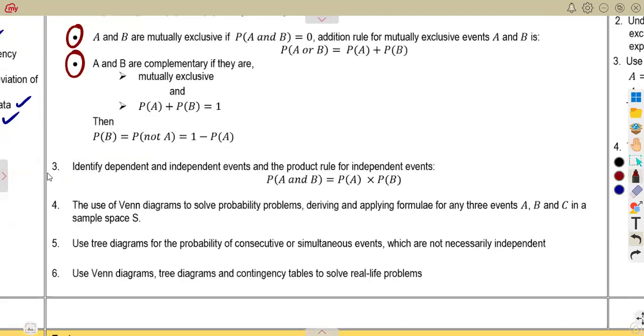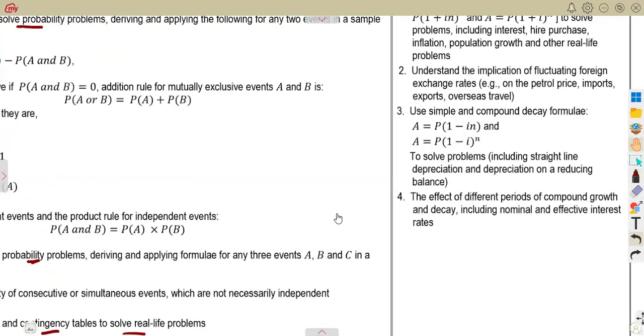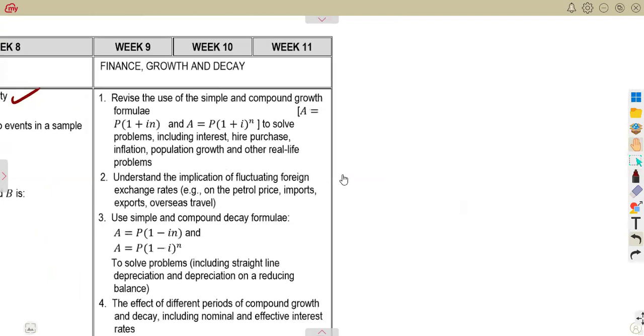Also, you must be able to identify dependent and independent events in the simplification that you are going to use, then the use of the Venn diagrams to solve probability problems, and also the use of tree diagrams in solving of these probability problems, and also the use of contingency tables to solve real-life problems.